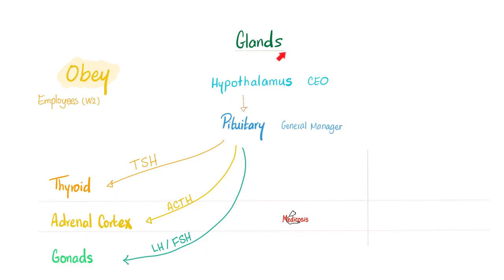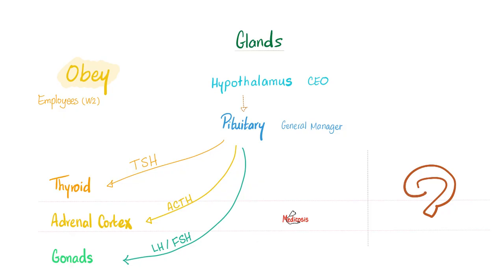Back to the basics. As you remember, the hypothalamus is the chief executive officer of the endocrine system. The pituitary is the general manager. Under the pituitary, we have three employees: the thyroid gland, adrenal cortex, and gonads. They obey the general manager. But do you remember who are the independent contractors that do not listen to the pituitary? Instead of thyroid, say parathyroid. Instead of adrenal cortex, say adrenal medulla. And the last one is the endocrine pancreas.